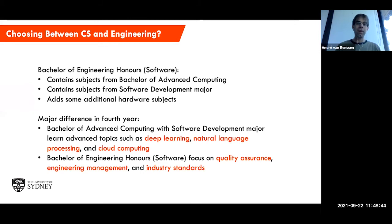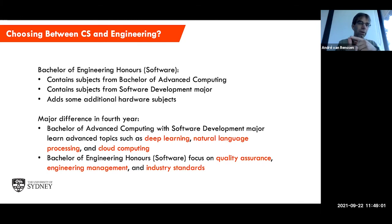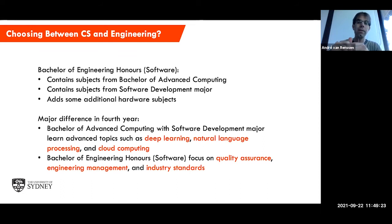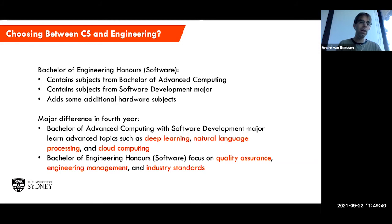The Bachelor of Engineering focusing on software contains a number of the core units from the Bachelor of Advanced Computing — things like introduction to programming and some math units. It also contains a number of subjects from the software development major, though not all of them, because the Bachelor of Engineering focuses more on the building of hardware and software systems. It also adds hardware-related units — think units that might come from electrical engineering.